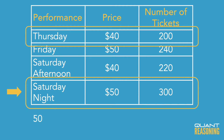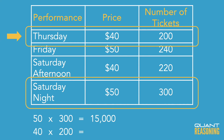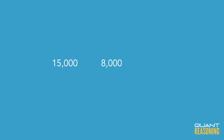50 times 300 — that's 15,000. And 40 times 200 — that's 8,000. So the difference is 7,000. And that's the answer.